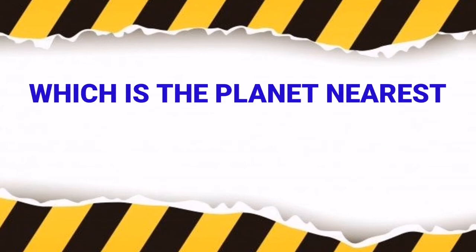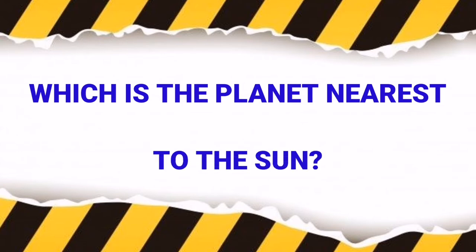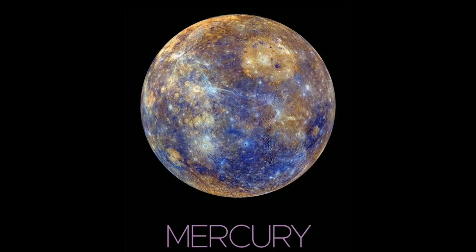First question. Which is the planet nearest to the sun? Sun, Suryanood, eetavum aadutth stithi chayunna Grahaeng — planet — ethan. Answer: Mercury.